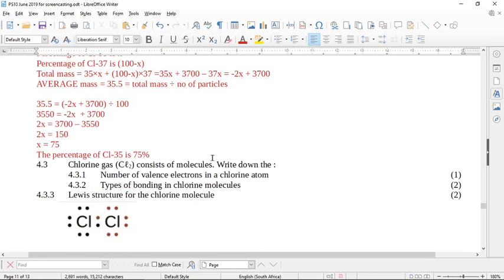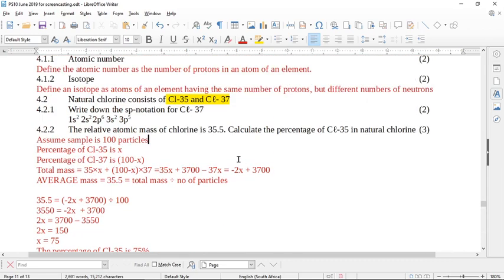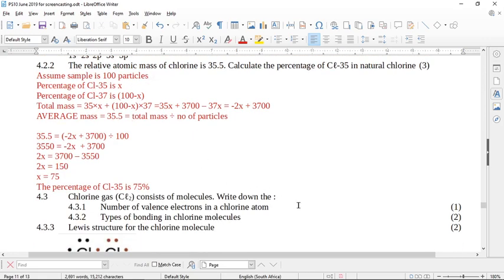Chlorine gas consists of molecules. Write down the number of valence electrons in a chlorine atom. To do this, you have to know what is the valence number. It is the number of electrons in the outer shell. If you look at the SP notation, the inner shell is one, the second shell is two, the outer shell is three. So you have to count all the electrons in the outer shell, which is two plus five, which is seven. There are seven valence electrons. And you can also use the old numbering on the periodic table where there's that VII will also tell you seven.